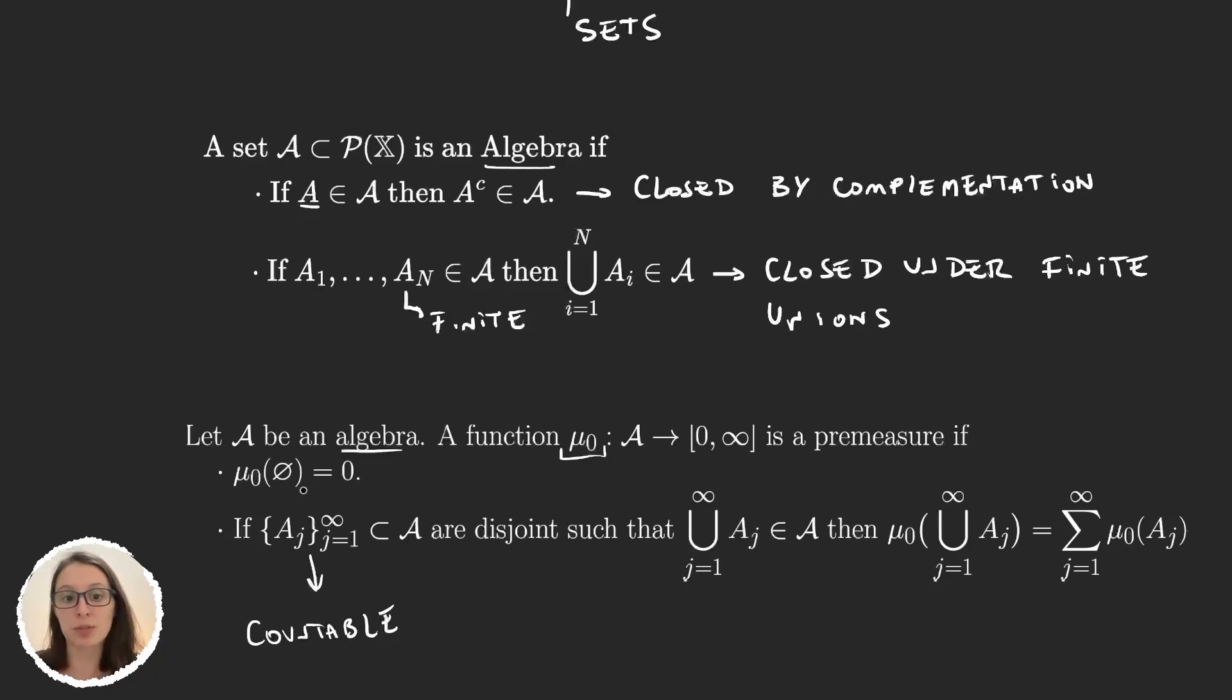But every time we grab a countable sequence of sets in the σ-algebra for which the union is in the σ-algebra, so this is also a hypothesis because it may not be satisfied, then the premeasure is additive. So the premeasure of the union is equal to the sum of the premeasures.